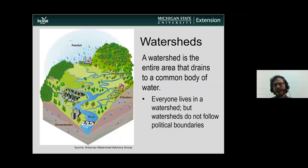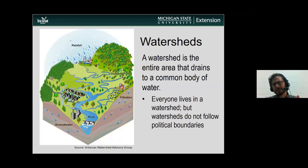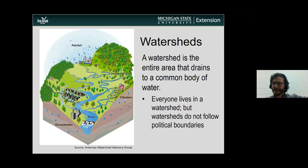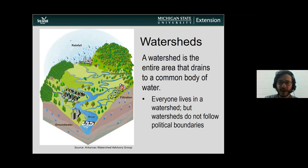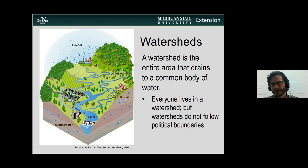To get us started, we're going to talk about watersheds. A watershed is the entire area that drains to a common body of water. We all live in one. Importantly, watersheds don't stop at our different political boundaries — these are natural delineations. If one community is trying to do beneficial practices for water quality but communities above them in the watershed aren't making the same effort, you might not be getting as big a benefit. Working together is really important when we look at the watershed, because what we do on land impacts our water.